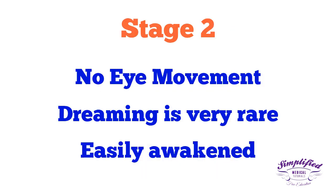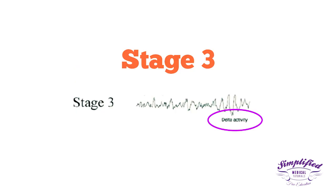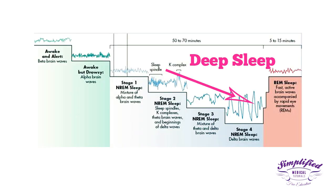In stage 3, a high amplitude delta wave rhythm dominates the EEG waves. It is a transition between stage 2 and stage 4, where the delta waves associated with deep sleep begin to occur.